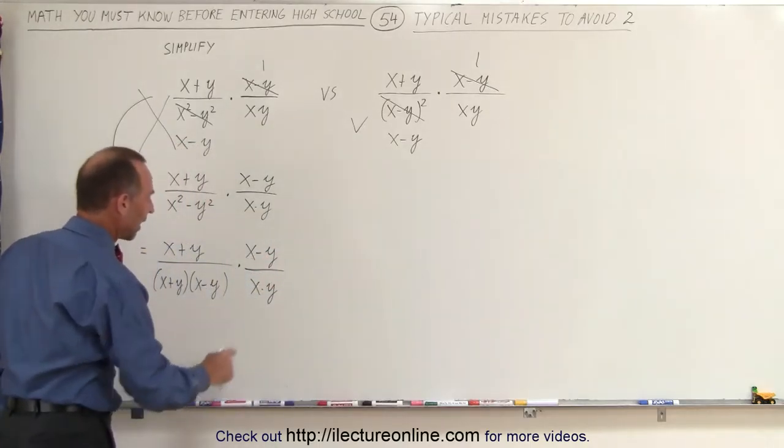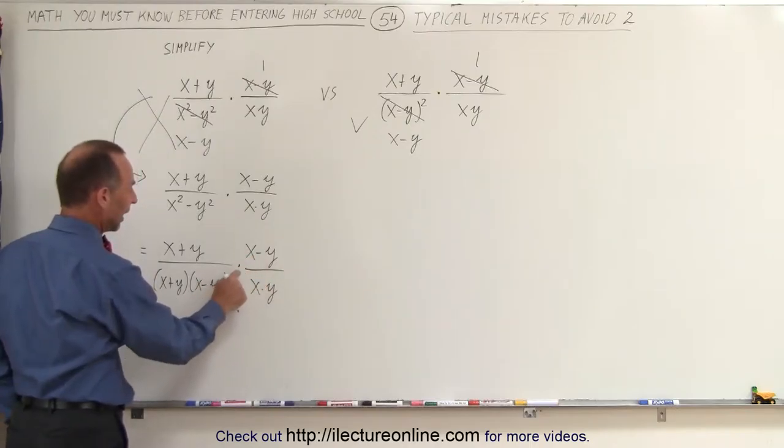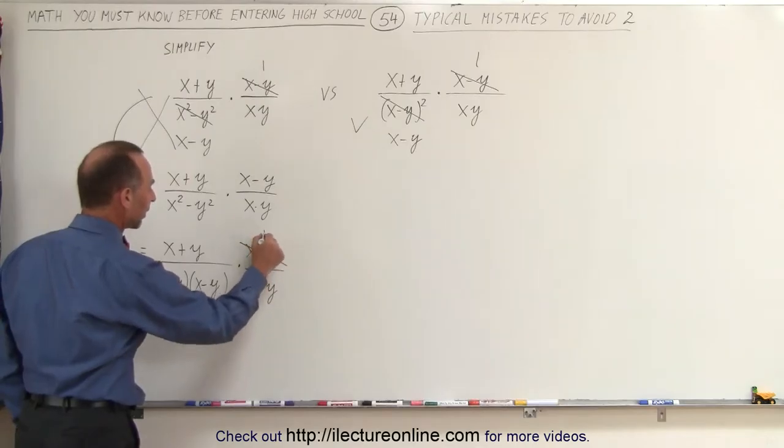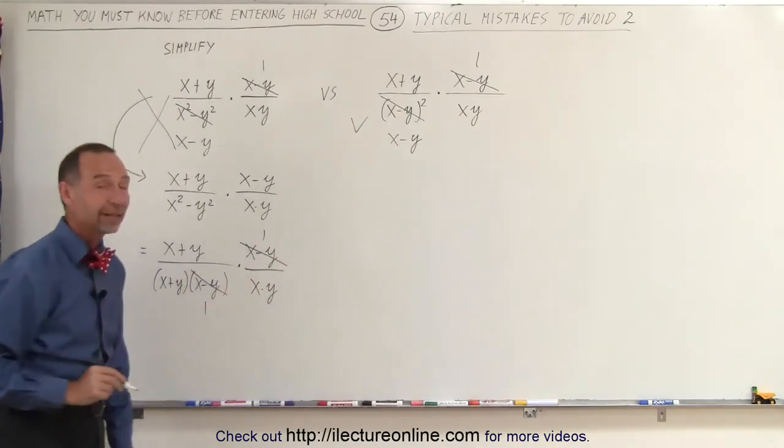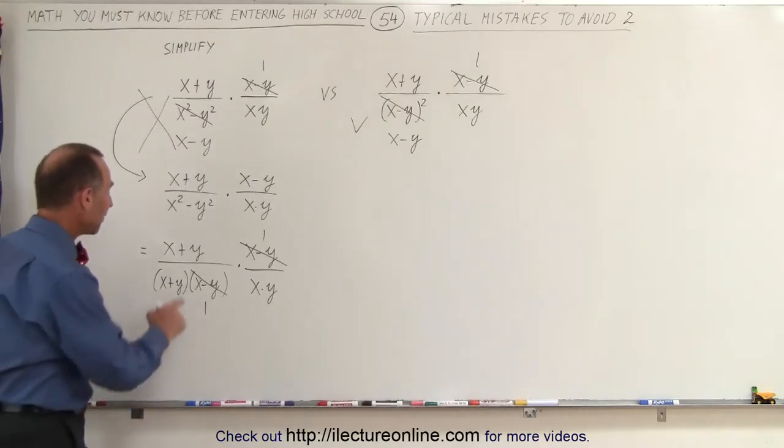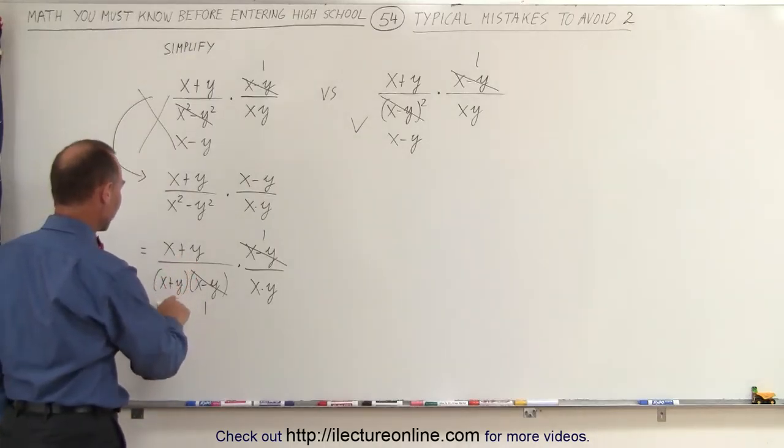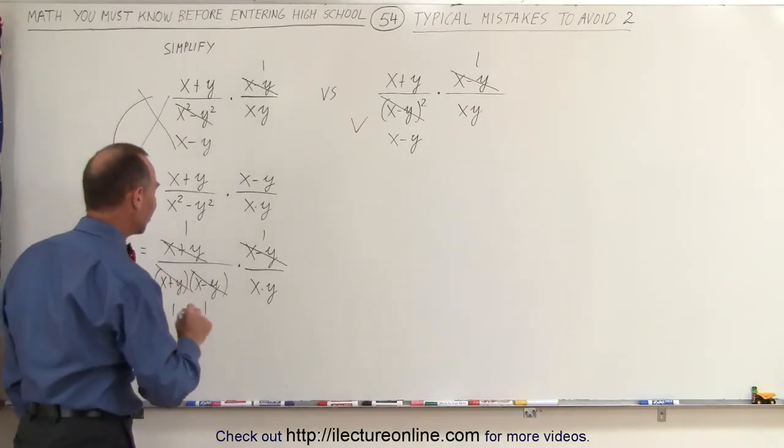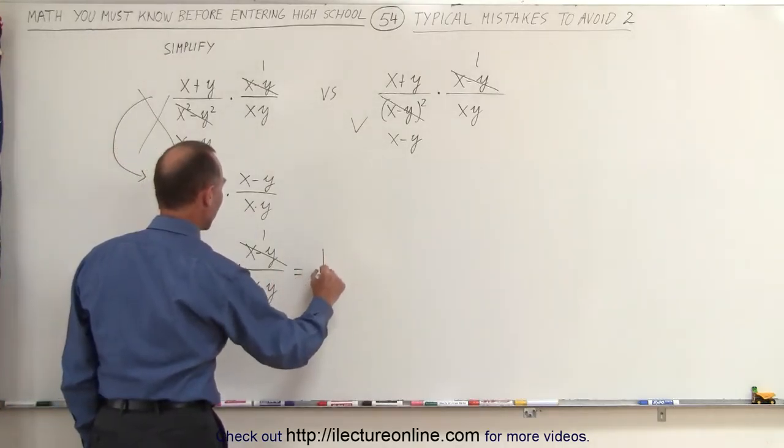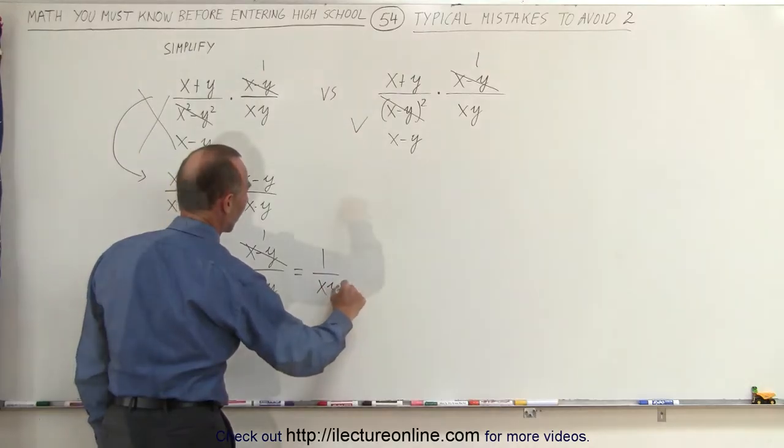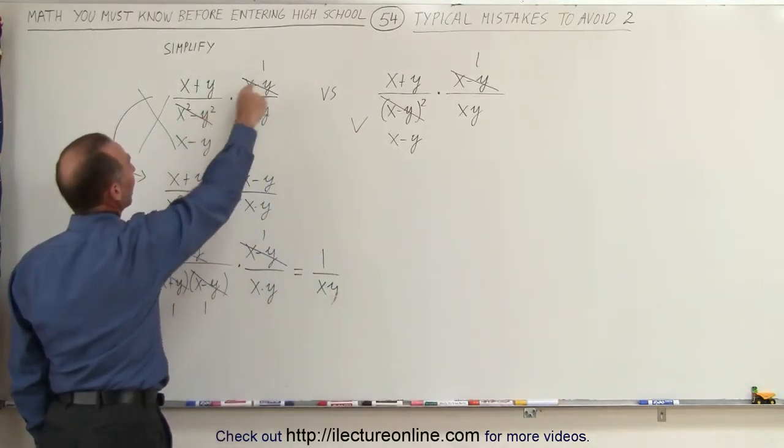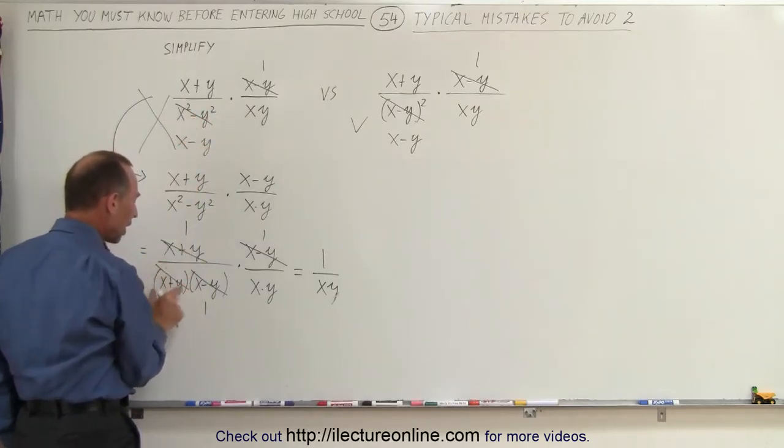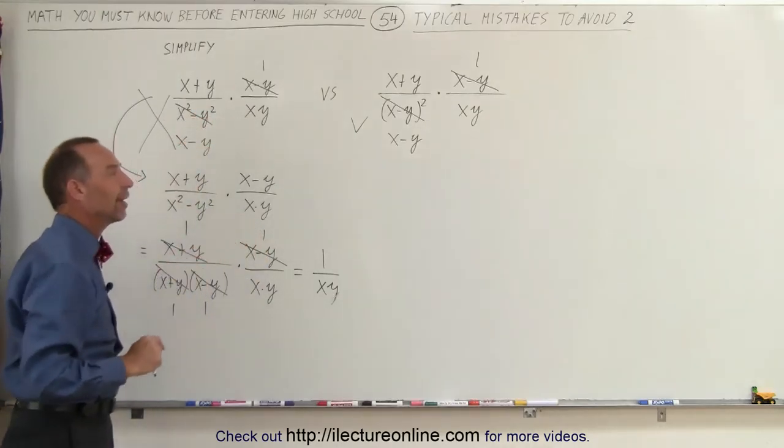Now realize that we have an x minus y here, and we have an x minus y. And since we're only dividing and multiplying, we can divide this by x minus y. We can divide this by x minus y and simplify it that way. And we have an x plus y over here, and an x plus y over here. So this simplifies to a 1, and this simplifies to 1. And this can therefore be written as 1 divided by x times y. So notice, this cannot be done straight like this. You have to first factor this, write it as a product of two binomials, before you can start simplifying.